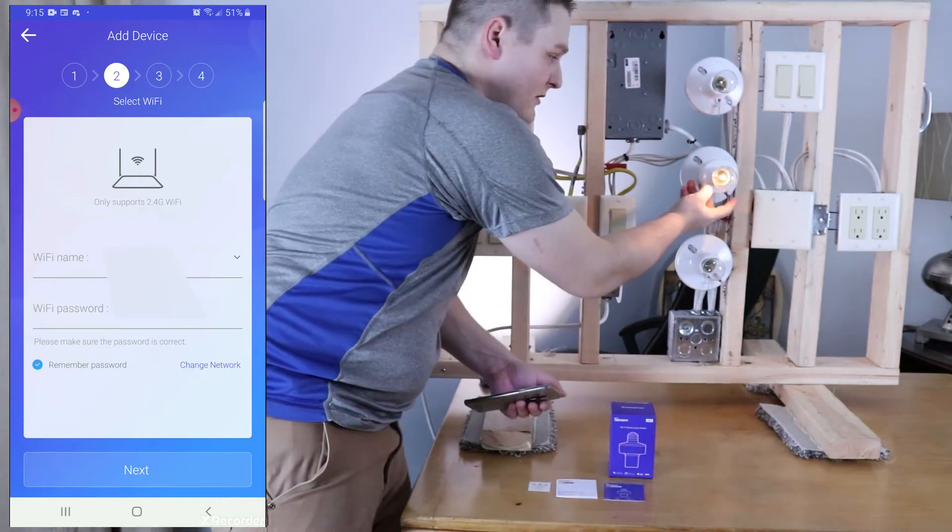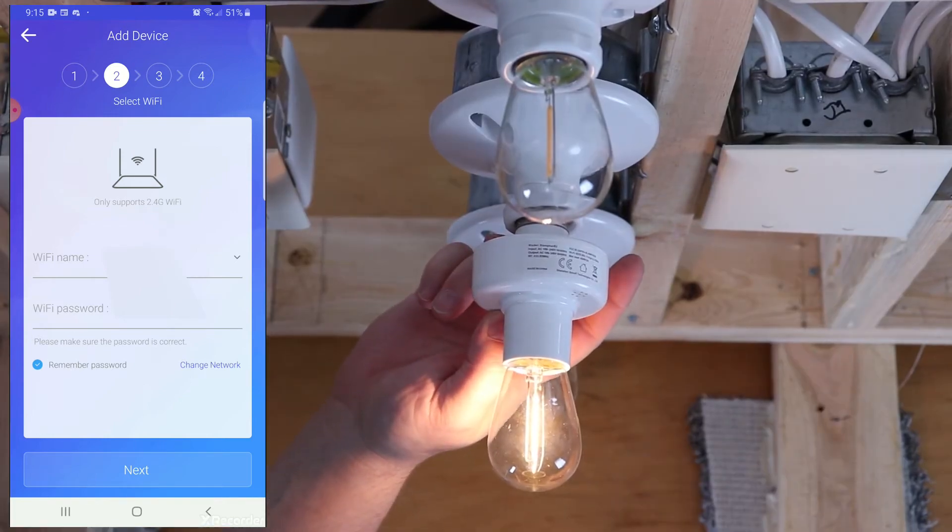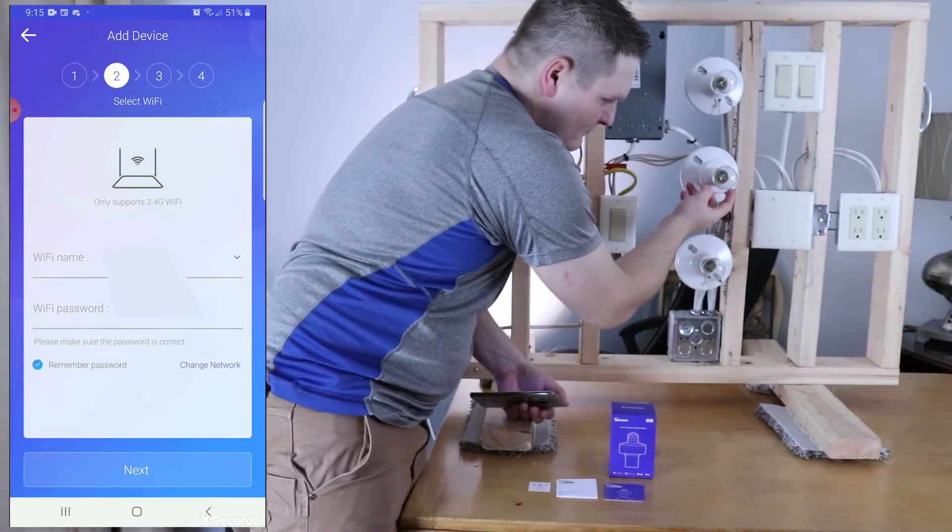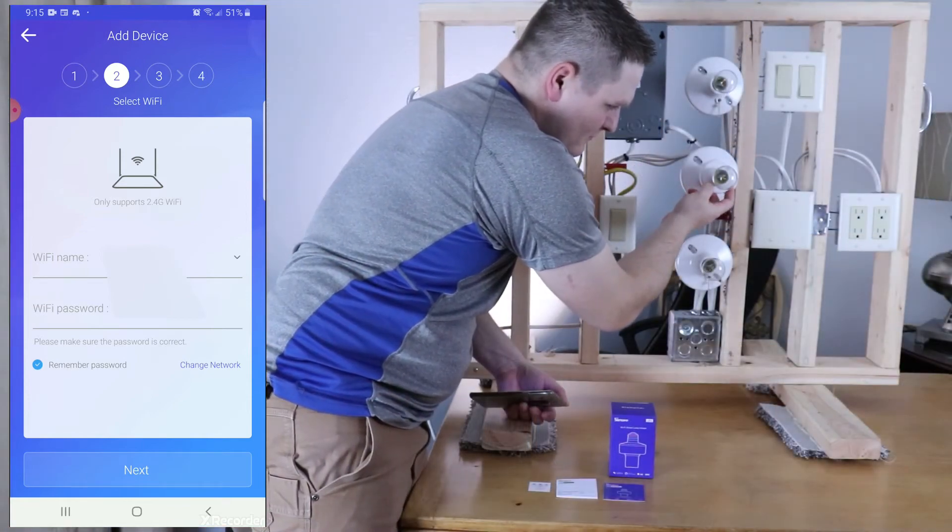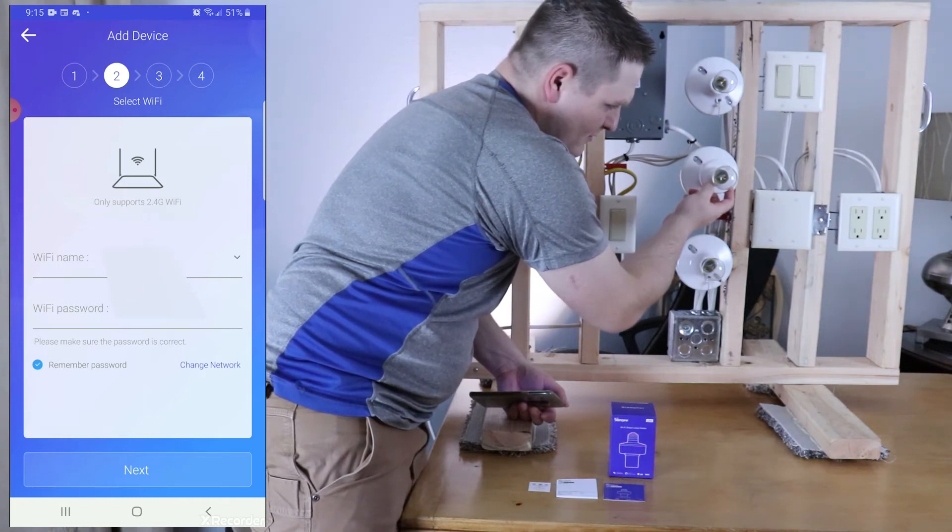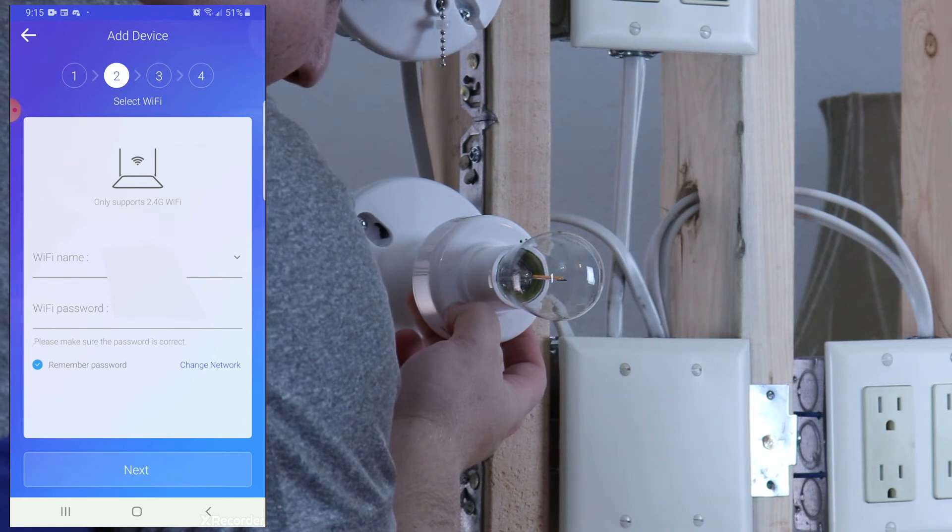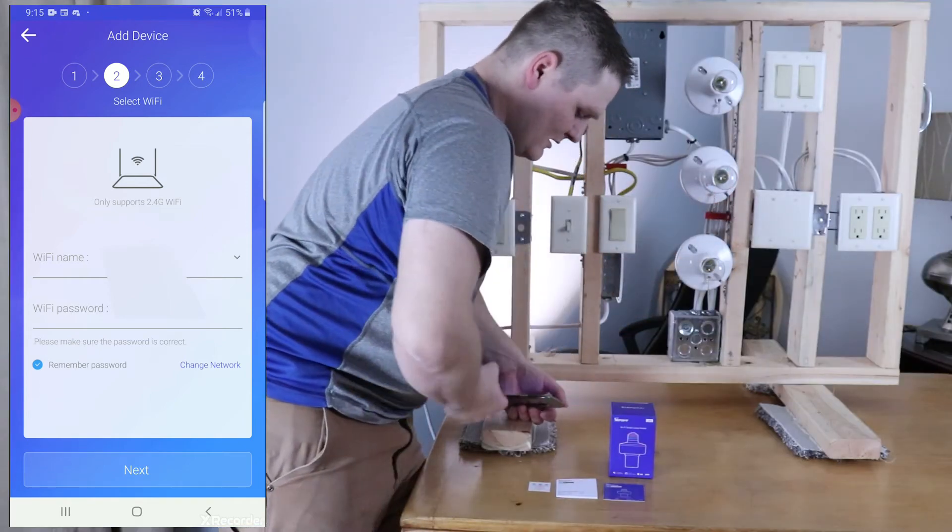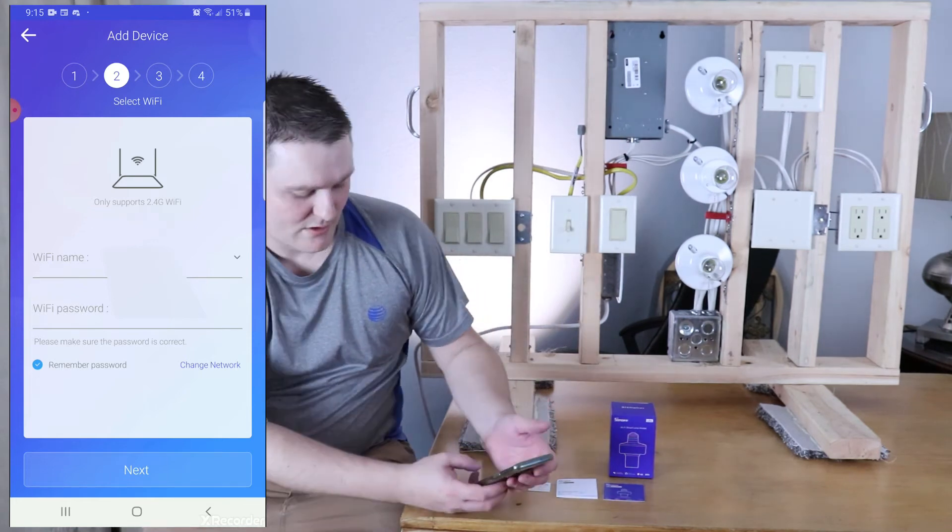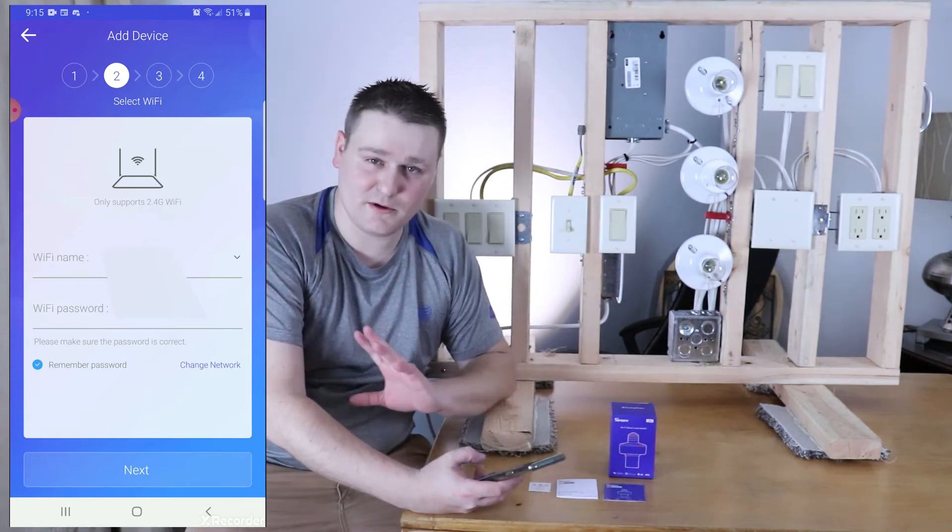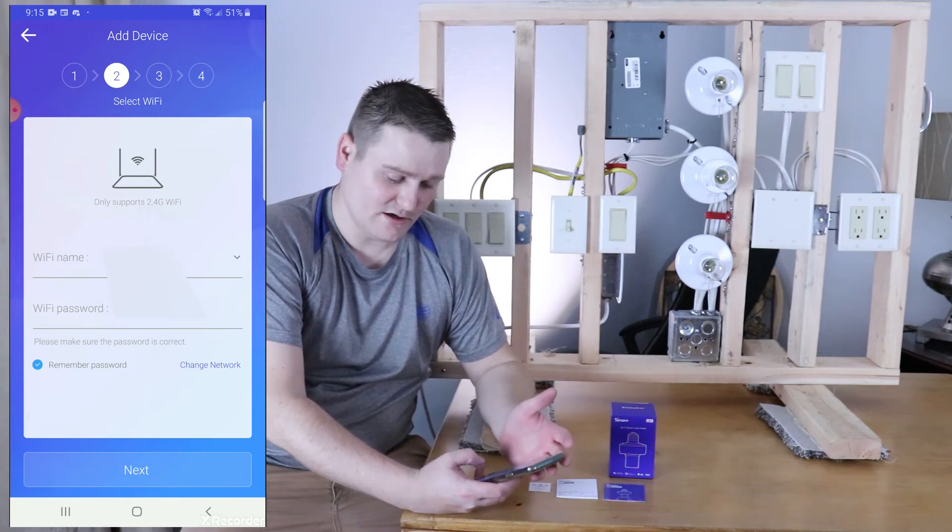Make sure it's doing two fast, one slow. So, I'm gonna hold this for 10 seconds. Nope, it didn't go that time. There we go. Two fast, one slow. And, that should be in pairing mode. And then, you're gonna have your device where you type in your network SSID. And, you're gonna hit next.